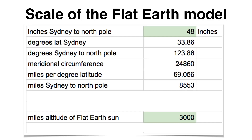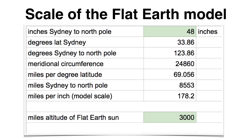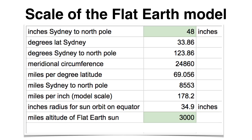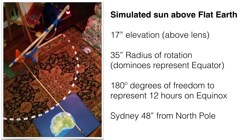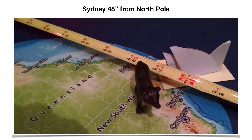Once I picked 48 inches, that gave me the model scale: 178 miles per inch. That tells me the radius of the sun's orbit on the equinox will be about 35 inches, and the elevation of the flat earth sun will be 17 inches. Here's a photo of the setup — 17-inch elevation, 35-inch radius of rotation, and 180 degrees of freedom representing 12 hours of sun on the equinox. Sydney is accurately placed 48 inches from the North Pole using a tape measure.